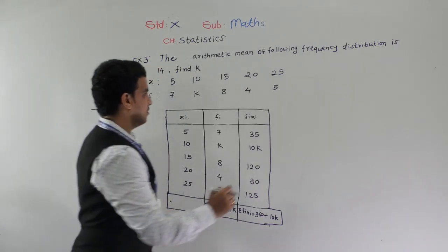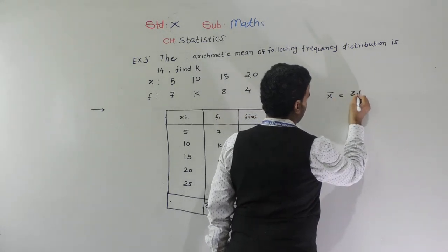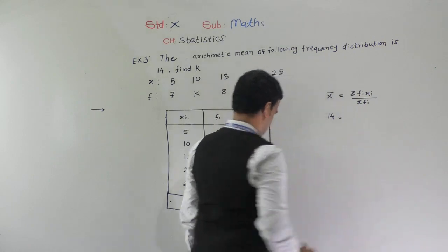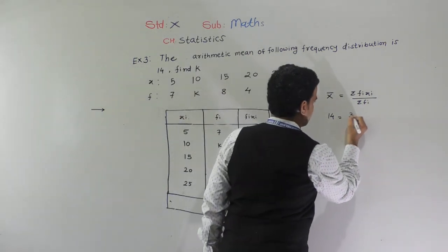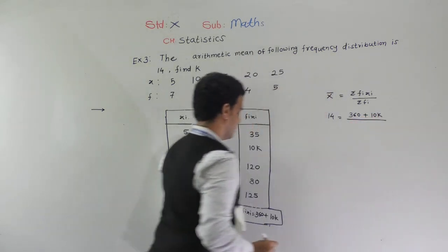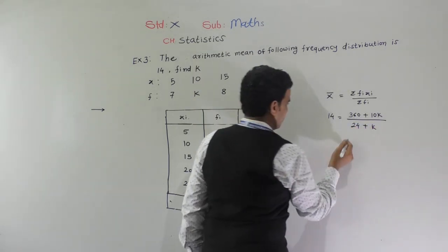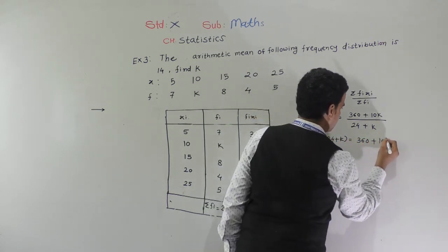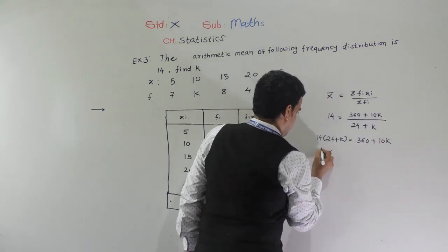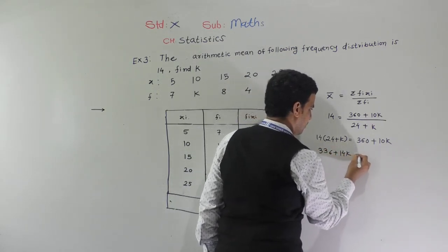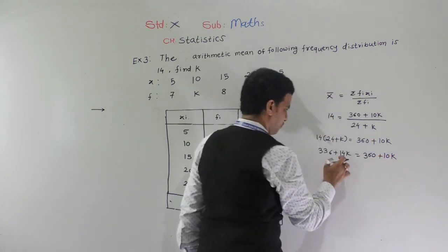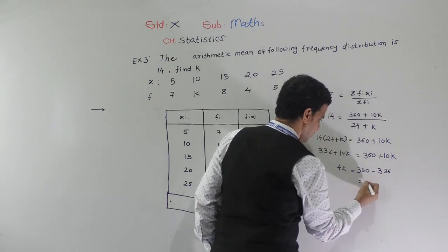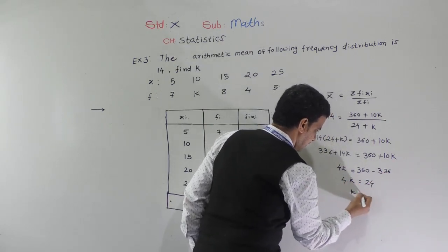Now we find the value of k. Arithmetic mean is given as 14. So x-bar equals summation fixi divided by summation fi: 14 equals 360 plus 10k divided by 24 plus k. So 14 into (24 plus k) equals 336 plus 14k equals 360 plus 10k. Therefore 14k minus 10k is 4k, and 360 minus 336 is 24. So 4k equals 24, giving k equals 6. The missing frequency is 6.